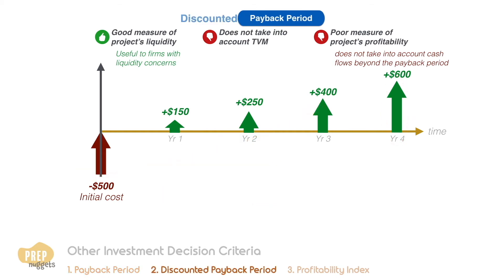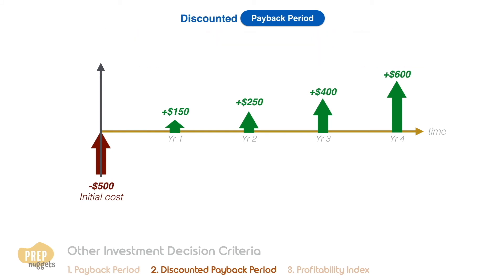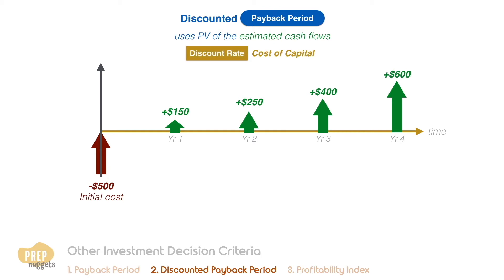This brings us to the discounted payback period method, which addresses this shortcoming. This method uses the present values of the estimated cash flows rather than the future values used in the earlier method. The discount rate should be the cost of capital of the firm.